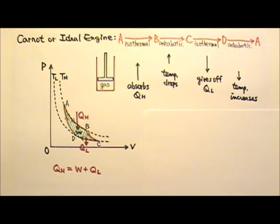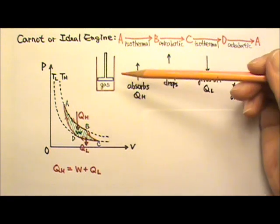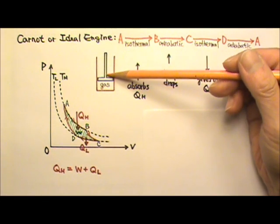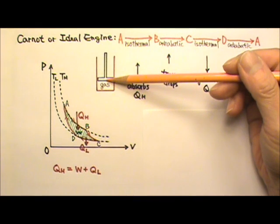because the Carnot cycle requires the gas to be in equilibrium all the time. This requires the expansion and the compression of the gas to be carried out extremely slowly, which deems the Carnot engine impractical.